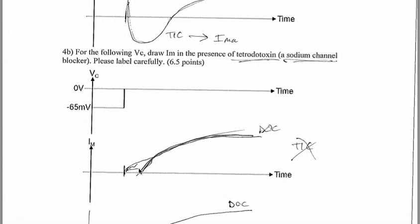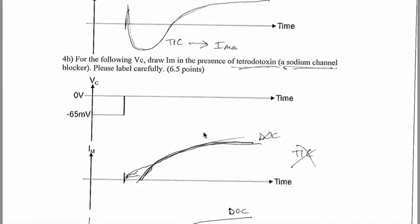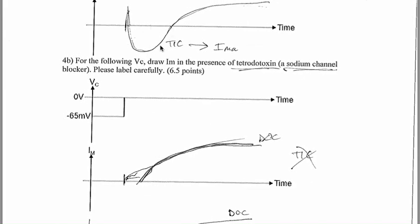So, if we have 4B, if we have tetrodotoxin, so it blocks the sodium channels, what happens? Well, what happens is that this tick area is not going to happen, and we're only going to have sodium current dock, basically.